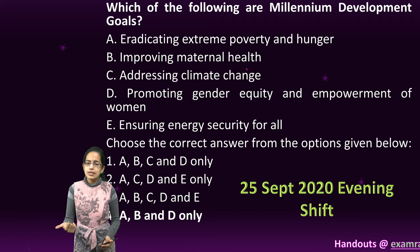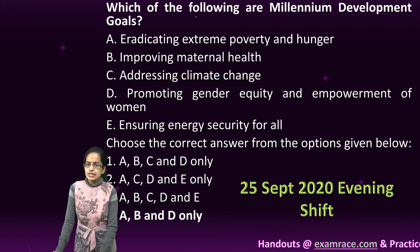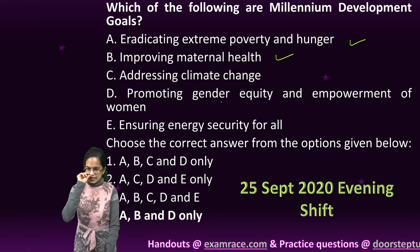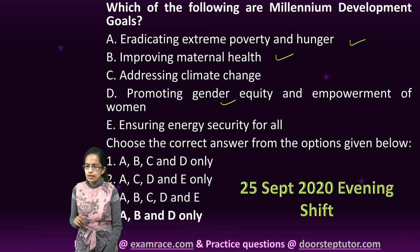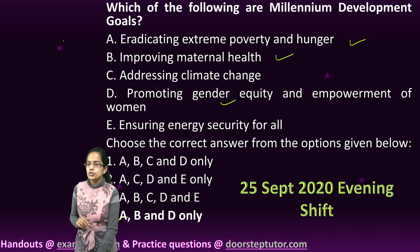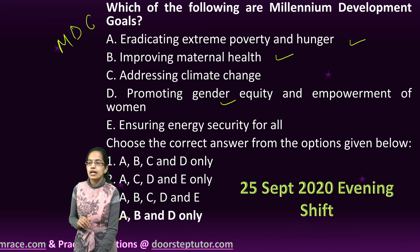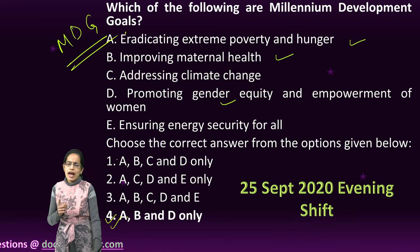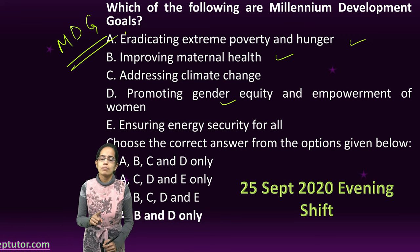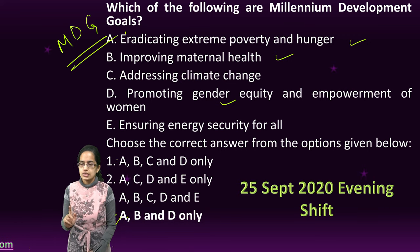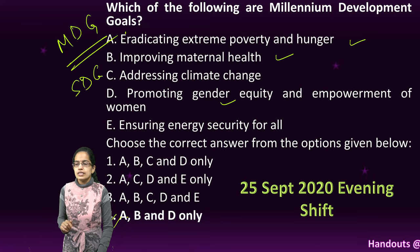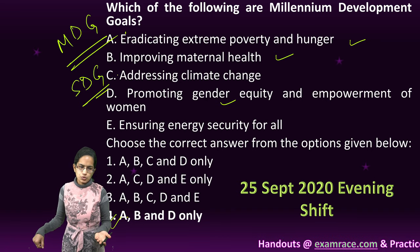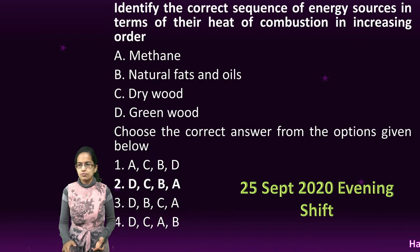The Millennium Development Goal addresses the issues of poverty and hunger, maternal health, and gender equality and empowerment. So A, B and D are the right options. A separate class on Millennium Development Goals has been completed. Every time there will be either one question from Millennium Development Goals or Sustainable Development Goals — cover this very carefully, as it is a very small and very scoring topic.